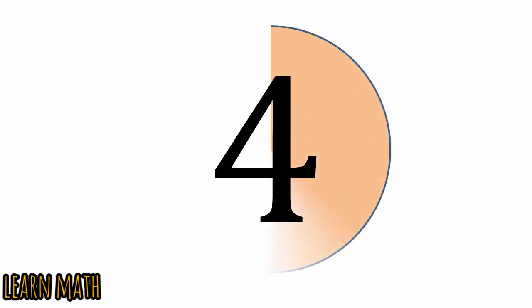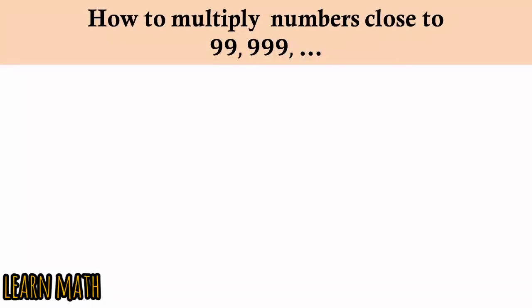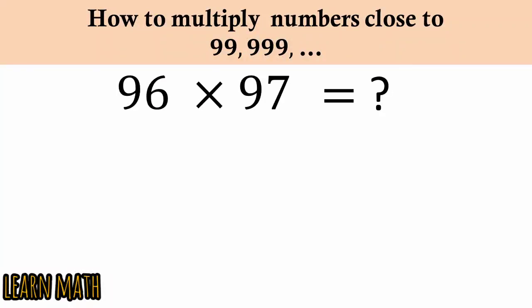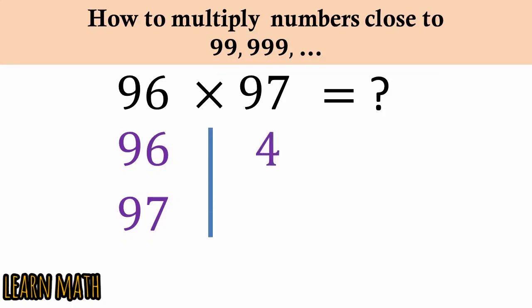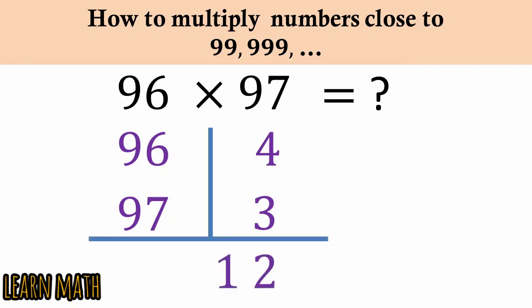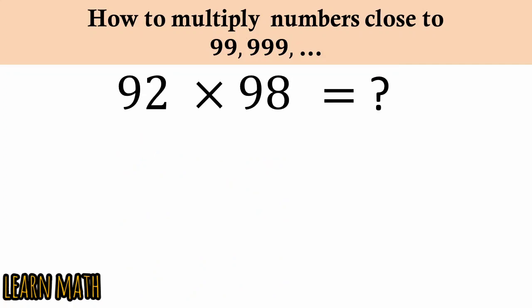The fourth trick is how to multiply numbers close to 99, 999, etc. For example, 96 multiplied by 97: write 96 and 97, then 100 minus 96 is 4, 100 minus 97 is 3. Multiply 3 with 4 to get 12. Then 96 minus 3, or 97 minus 4, in both cases is 93 — so 9312 is the answer.